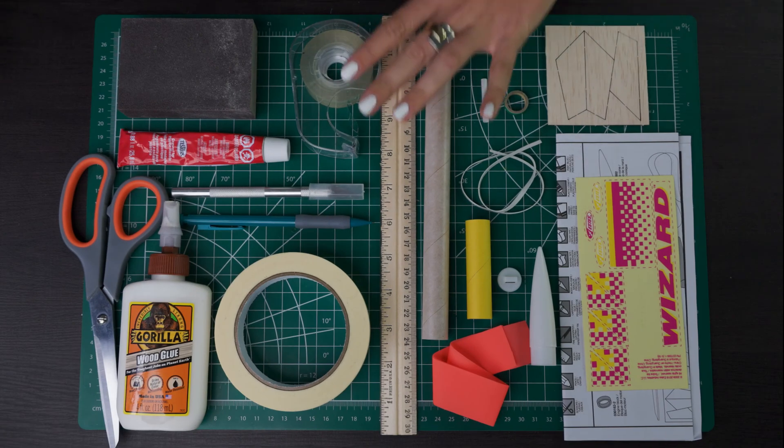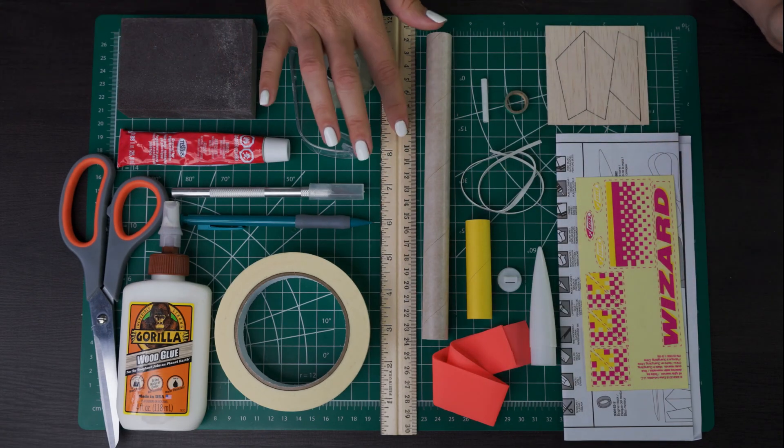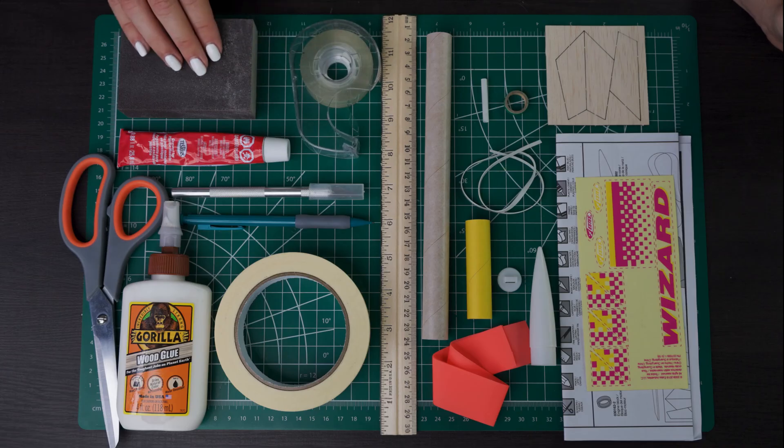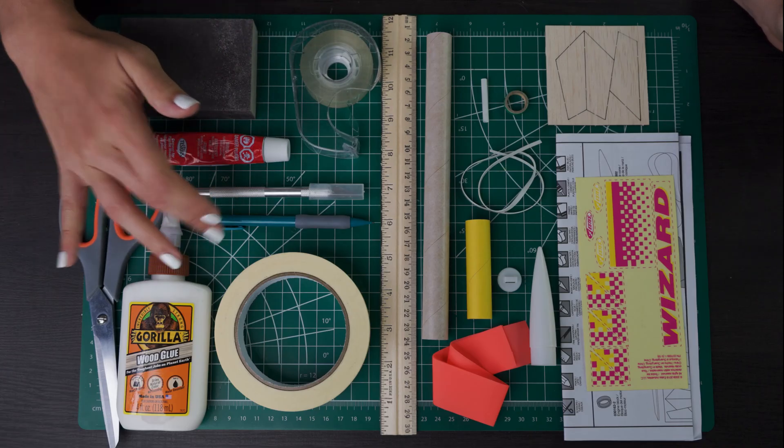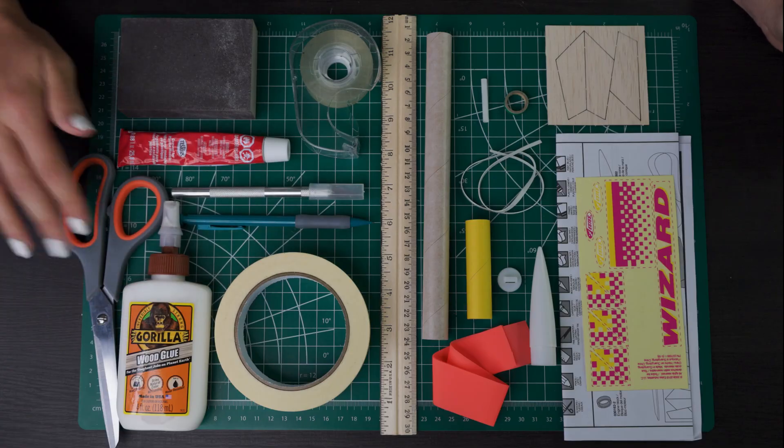For this build you are going to need your wizard kit, a ruler, clear tape, sandpaper, plastic cement, hobby knife, pencil, masking tape, wood glue, and scissors.